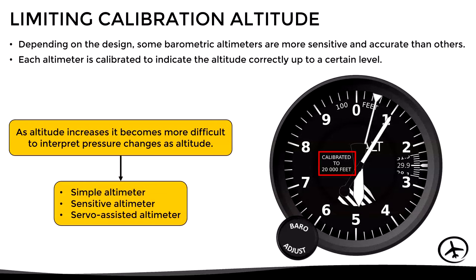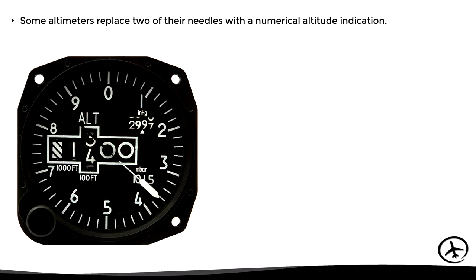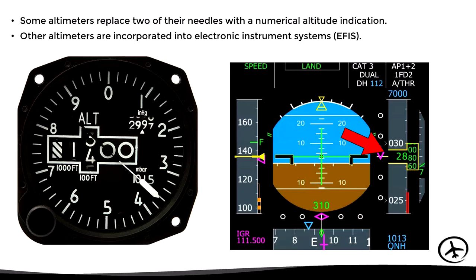There are different altimeter designs. The simple altimeter is widely used in small aircraft flying at low altitudes. The sensitive altimeter incorporates a second aneroid capsule and a temperature compensation system, increasing accuracy at higher altitudes. The servo-assisted altimeter incorporates an electric motor that allows much higher accuracy pressure measurement. There are also different instrument presentations — some replace two needles with a numeric altitude indication, and others are incorporated into digital electronic flight instrument systems.